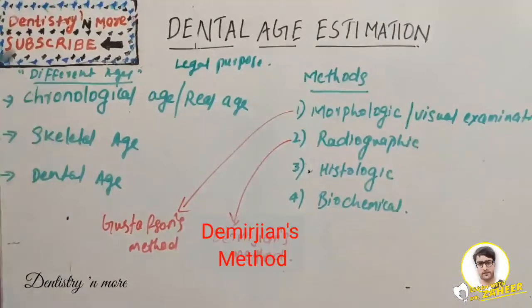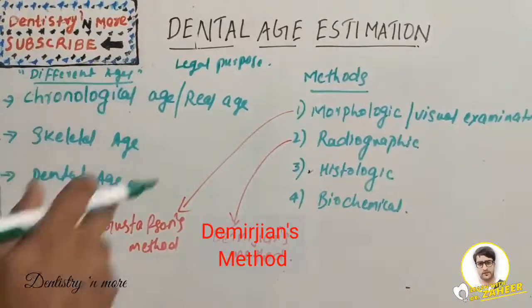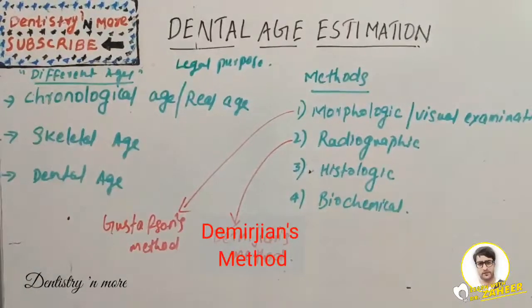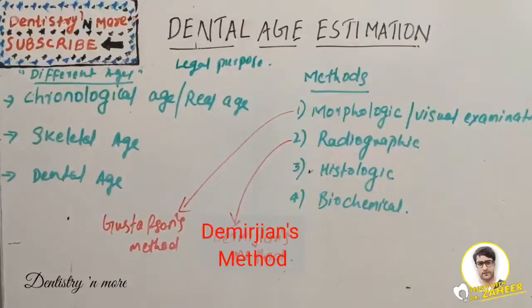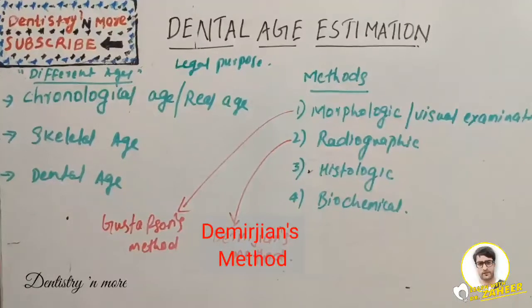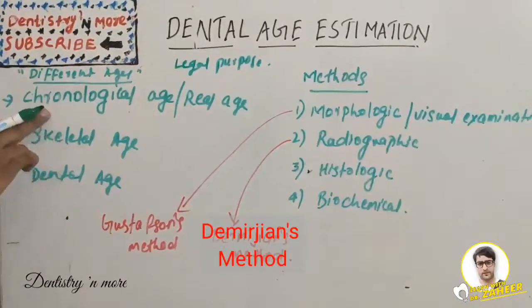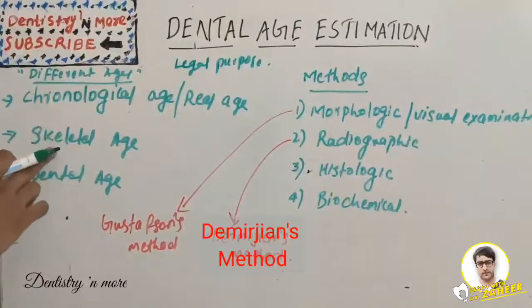Therefore, accuracy of age estimation methods for suspects with unknown chronological age who are involved in any type of crime is needed in the interest of justice. We first need to understand a few terminologies: chronological or real age, skeletal age, and dental age.